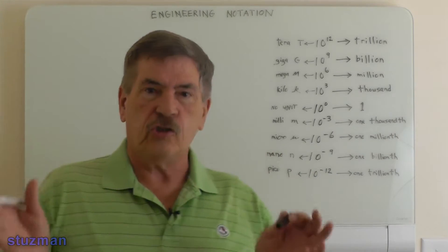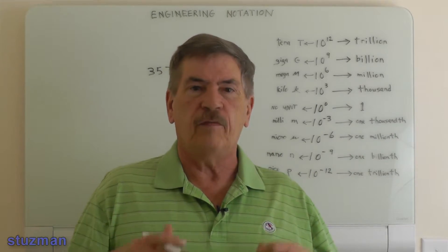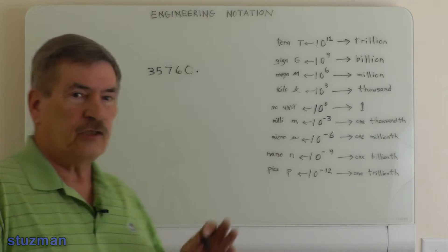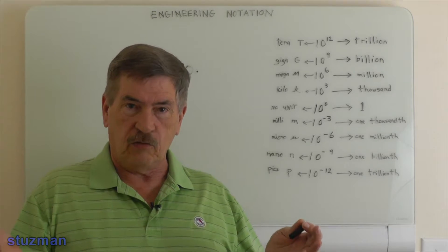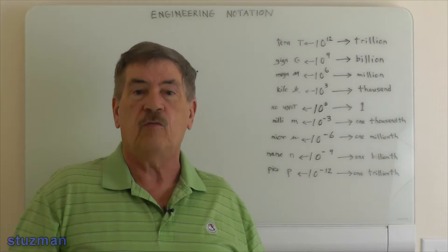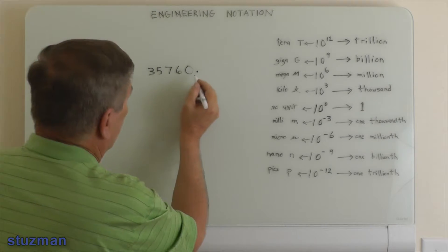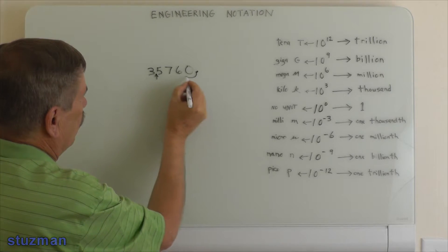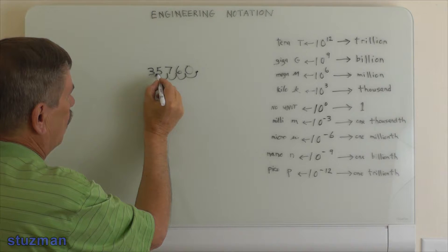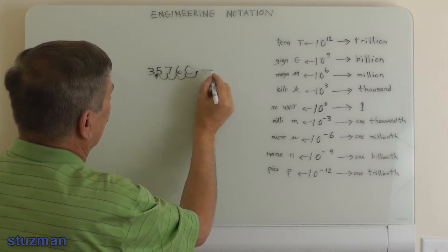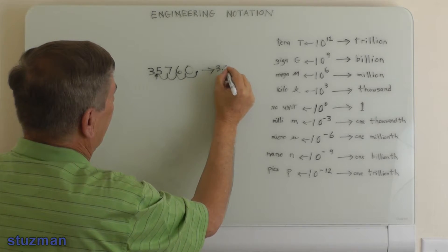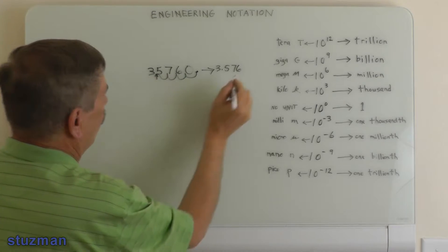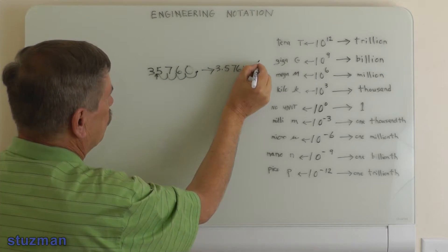Let's just do an example. Our decimal is right here. As a reference, let's do scientific notation first and then we'll do engineering notation. We're going to move our decimal over to the left — one, two, three, four places. So that's going to give us 3.5760 times 10 to the fourth.